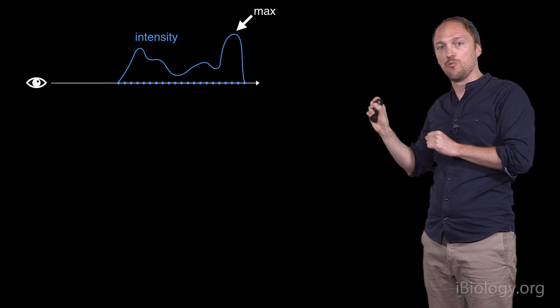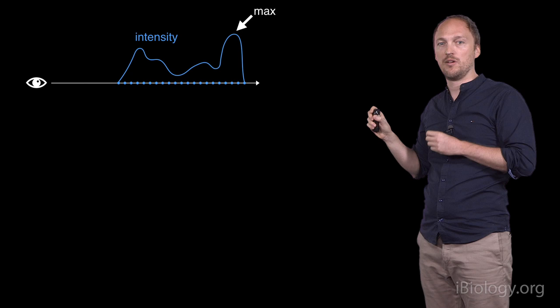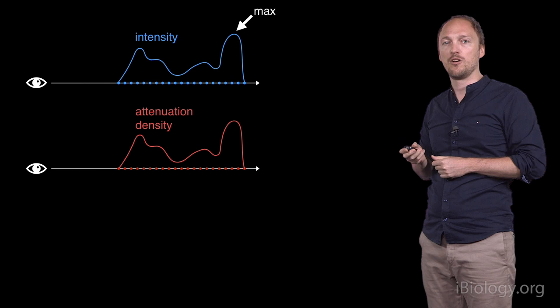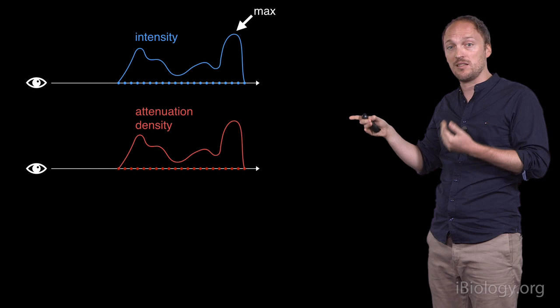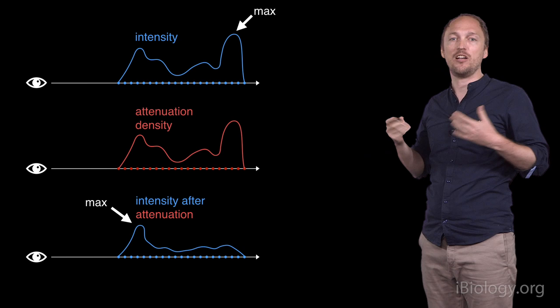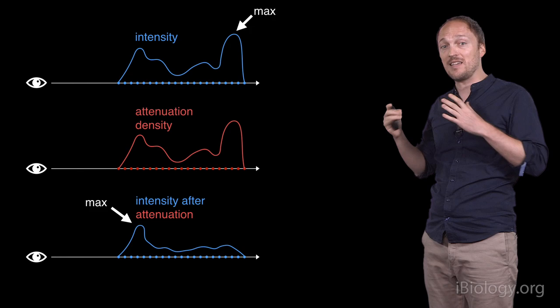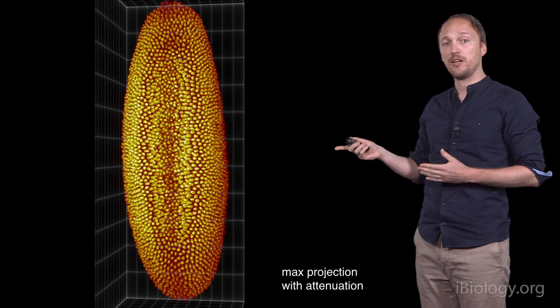Let's consider an example. Here, the maximal projection would return a value coming from the back of the visualized sample, despite the fact that there's a lot of structure to show at the front of it. One simple solution is to model the attenuation as proportional to the signal itself. Now, intensity values are attenuated as they traverse the sample. The maximal voxel value is not at the back of the sample anymore, but at the front, because there's less attenuation for structures at the front than at the back.